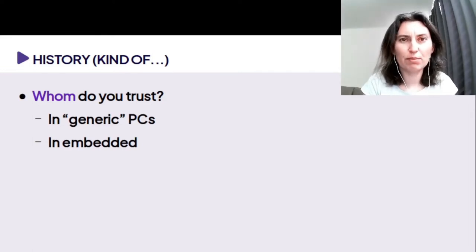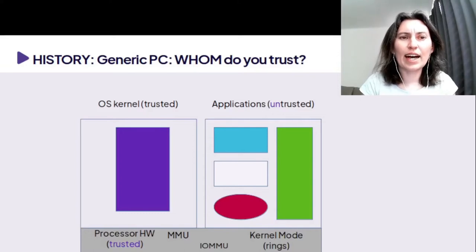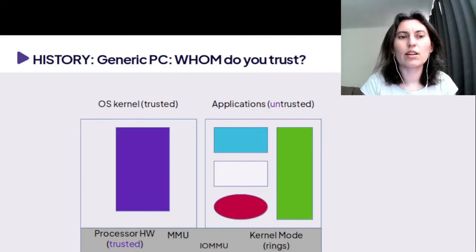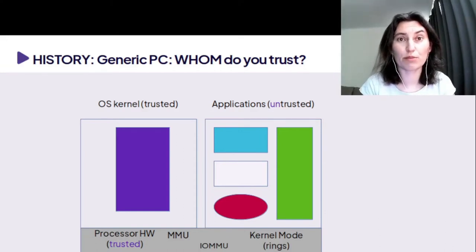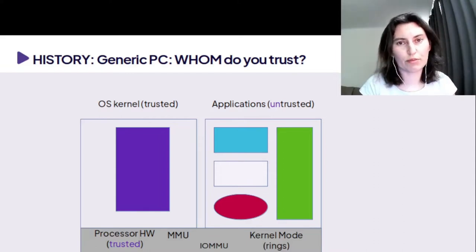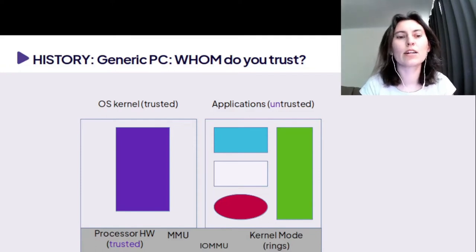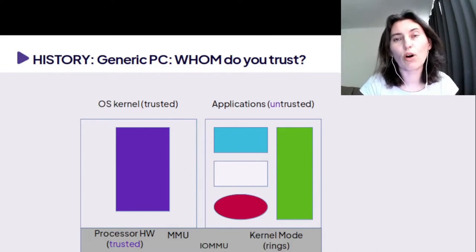The example of a generic PC: a generic PC has hardware and a processor running the operating system and applications. The processor itself is something that we trust to separate the operating system from the application, and to separate applications from each other. The processor has a few hardware elements to perform that work, like the memory management unit or kernel rings.